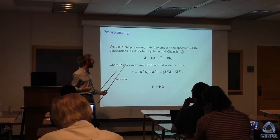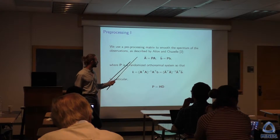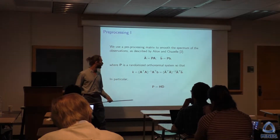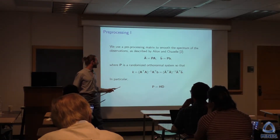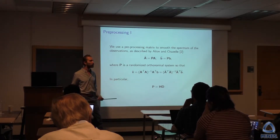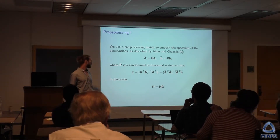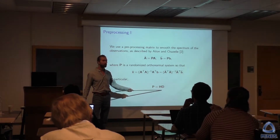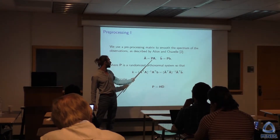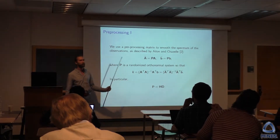I want to make sure this pre-processing matrix P — which is like the one used by I-Law and Bernard-Chazelle, first used for least squares in a similar context — doesn't actually change the solution. All you need for that is a transform HD: if you apply it to the A matrix to get A-tilde and apply it to the B matrix to get B-tilde, then the least squares solution is going to be exact.